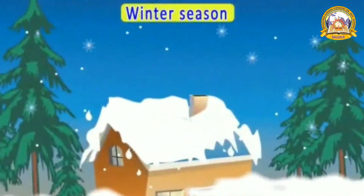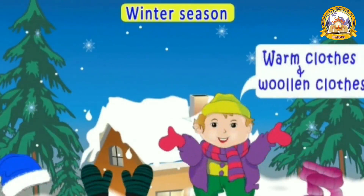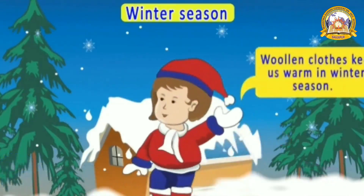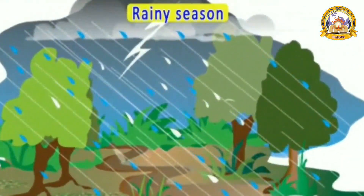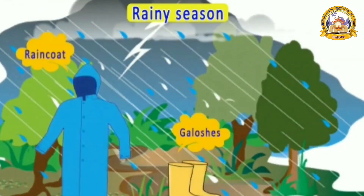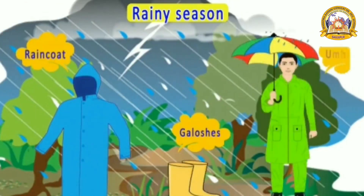Now let's see what we wear in the winter season when it's very cold outside. We wear warm and woolen clothes to protect us from the cold. Woolen clothes keep us warm in winter. When it's raining, we wear raincoats and galoshes, and also take an umbrella. These protect us from rain and keep us dry.